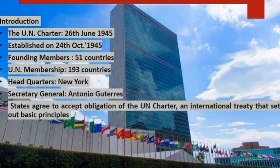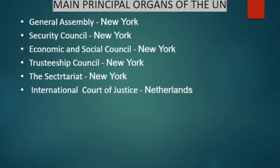There are six main or principal organs of the UNO: number one, the General Assembly; number two, the Security Council; number three, the Economic and Social Council; number four, the Trusteeship Council; number five, the Secretariat; and number six, the International Court of Justice.